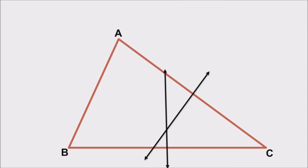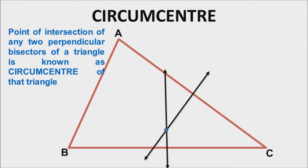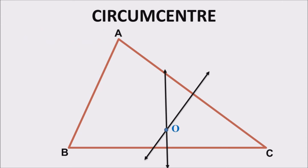These perpendicular bisectors intersect at a specific point. The point of intersection of perpendicular bisectors is defined as the circumcenter of a triangle. The circumcenter is labeled as O. If we draw the perpendicular bisector to the third side, it will also pass through O. So this is the circumcenter of a triangle.